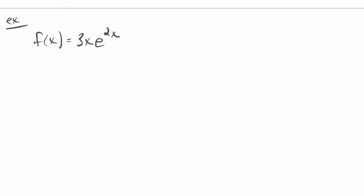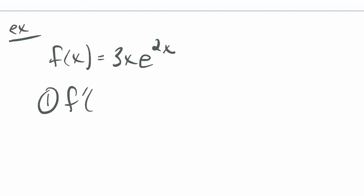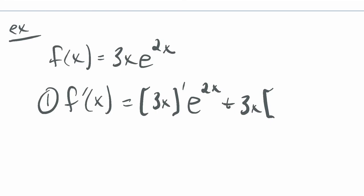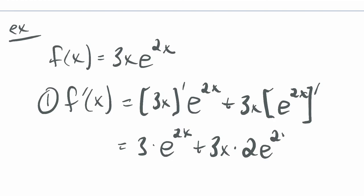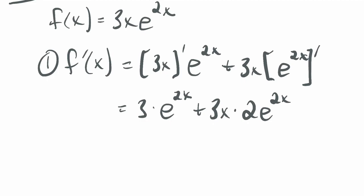We get a local max at x = -2 and a local min at x = 2. Last example — same process. Step one: find the derivative of f(x) = 3xe^(2x). Using the product rule and chain rule: f'(x) = 3·e^(2x) + 3x·2e^(2x). I notice both terms have e^(2x) as a factor, so I factor that out — and I can also factor out 3: f'(x) = 3e^(2x)(1 + 2x).